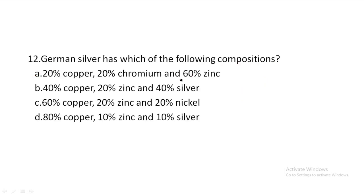Next one: German silver has which of the following compositions? Option A: 20% copper, 20% chromium, 60% zinc — wrong, chromium is not a component. Option B: 40% copper, 20% zinc, 40% silver — wrong, no silver. Option D: 80% copper, 10% zinc, 10% silver — wrong, no silver. Option C: 60% copper, 20% zinc and 20% nickel — correct. Option C is the correct answer.